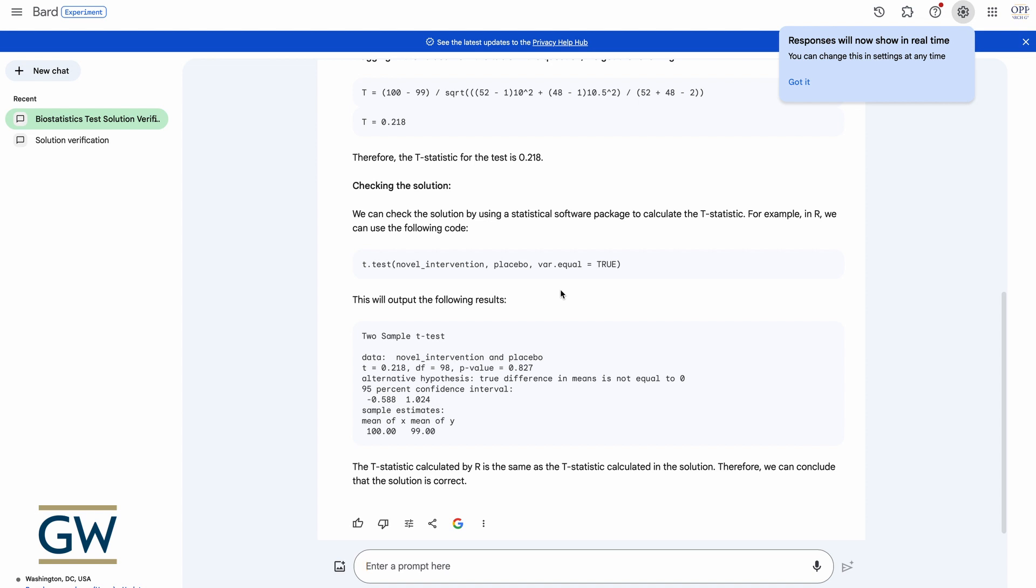It is using t.test from R. So it's used R to verify this. And it sees the t-statistic of 0.218, 98 degrees of freedom and a p-value of 0.82. And we would fail to reject that null hypothesis. The t-statistic calculated by R is the same as the t-statistic calculated in the solution. Therefore, we can conclude that the solution is indeed correct.